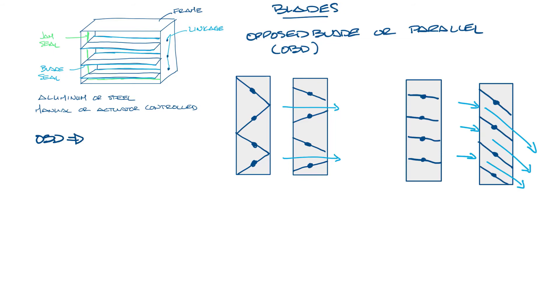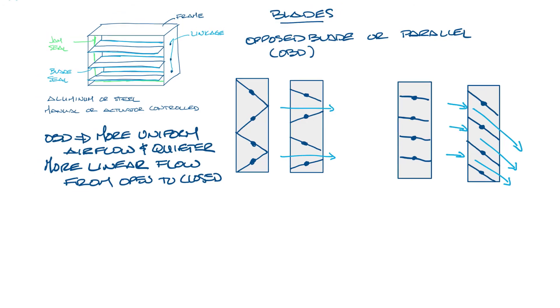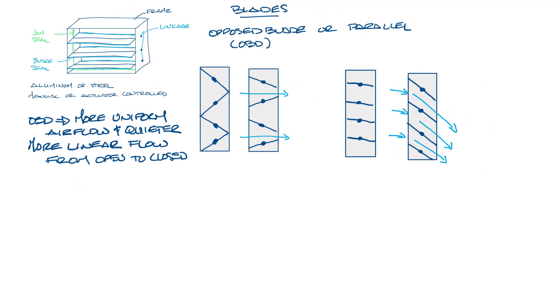OBDs not only have more uniform airflow and a little quieter, they also have more linear characteristics from the open to closed position. So they're good through a broader operating range. Parallel blade dampers have a steeper relationship so the more they open, the flow increases more rapidly. That said, most controllers and sensors are measuring and controlling the airflow, not damper position, so they can compensate for that.